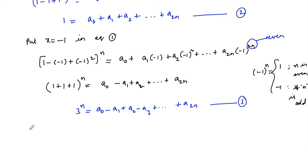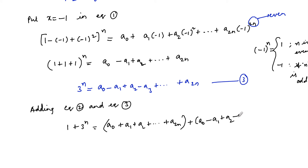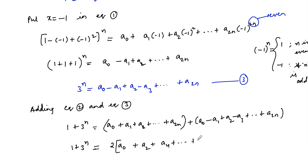Now adding Equation 2 and Equation 3: 1 + 3ⁿ = (a₀ + a₁ + a₂ + ... + a₂ₙ) + (a₀ - a₁ + a₂ - a₃ + ... + a₂ₙ). The a₁ positive and negative terms cancel, and we get 1 + 3ⁿ = 2(a₀ + a₂ + a₄ + ... + a₂ₙ).